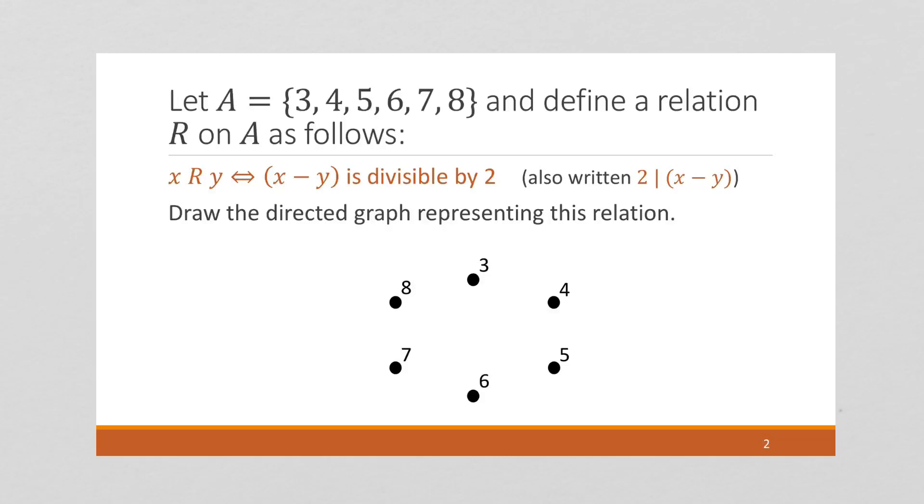So I'm going to say two elements of A, X and Y, are related if X minus Y is divisible by 2. Now, in case you're interested, this is another common way this is written.